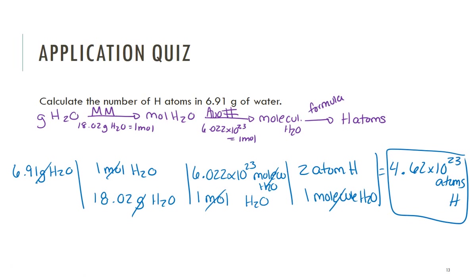The reason I say this is the most challenging question is we had to find the molar mass — it wasn't just on the periodic table — and there are three columns. On the exam, I'd give you the molar mass and the formula. I wouldn't want to test you on more than one objective at a time. Typically, exam questions are going to be two to three steps maximum.